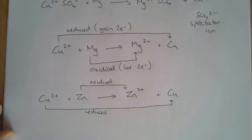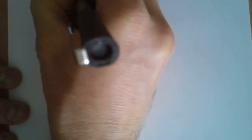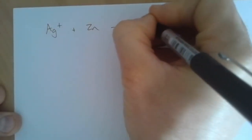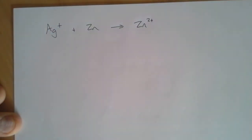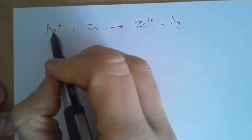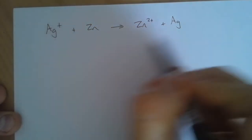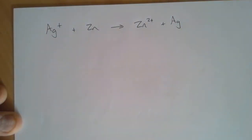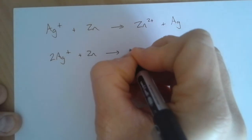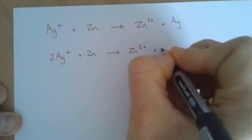Let's have a look at one example where we have to do some balancing again. This might be the reaction between silver plus ions and zinc. Zinc tends to form 2+ ions, so the equation would look like this. Zinc has gone from no charge to 2+, and silver has gone from a plus charge down to zero, so zinc has reduced the silver. Because we've got a difference in charges, we would need to balance the equation.